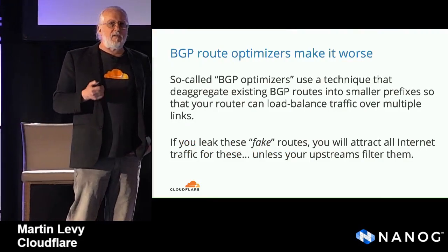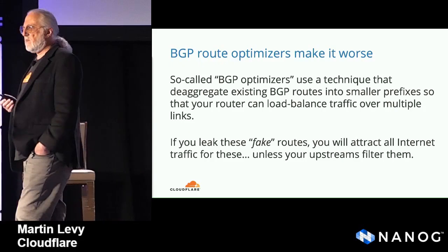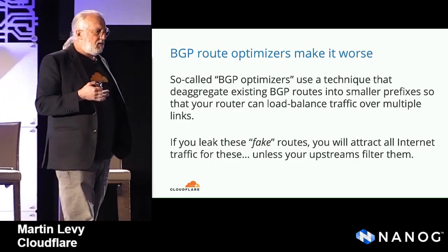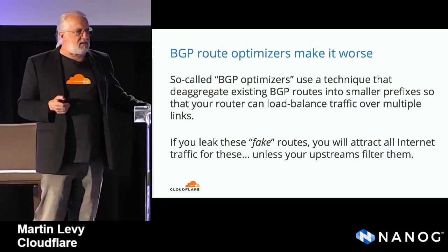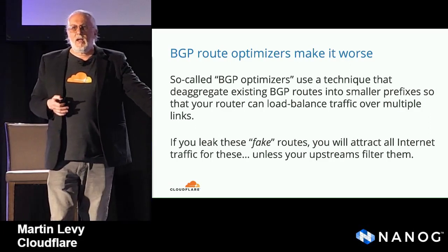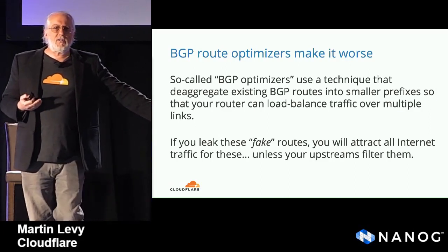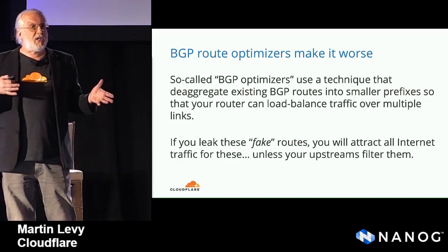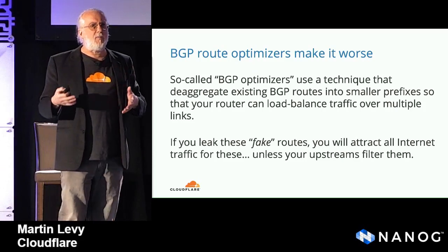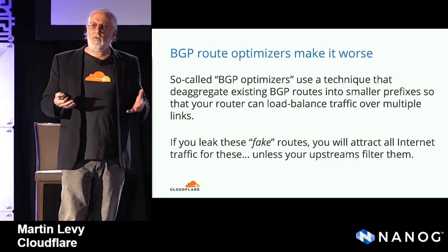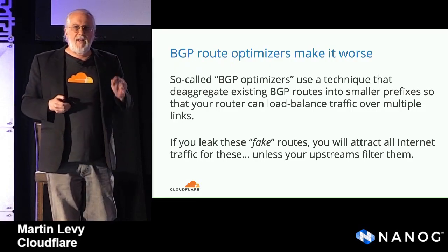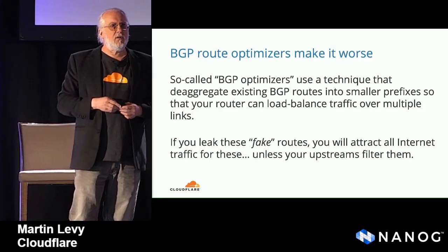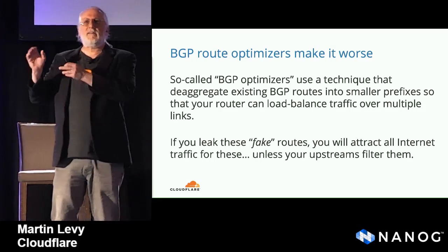Route optimizers are about improving the internet for whichever customer plugs one in. It seems — and we seem to have the proof on this day — that it doesn't optimize it for the rest of us. A route optimizer injects routes to steer traffic within somebody's network by generating additional routes, by generating next hops, by generating AS paths that don't exist, and more importantly in this case, by generating more specific routes that will steer traffic appropriately.